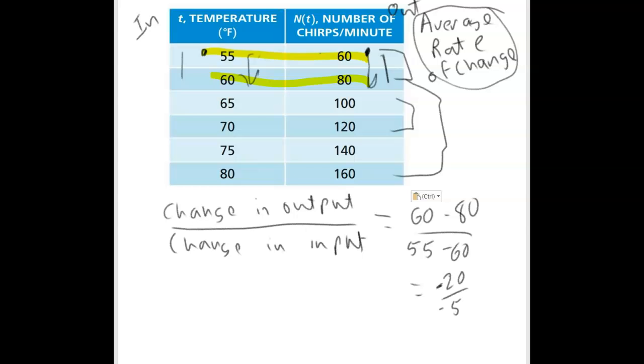The average rate of change is 4, and there are units on that. The units are units of the output over units of the input. This will be 4 chirps per minute per degree Fahrenheit. So every time the temperature goes up by one degree when it's 55 or above, you will get 4 more chirps per minute. That's the average rate of change.